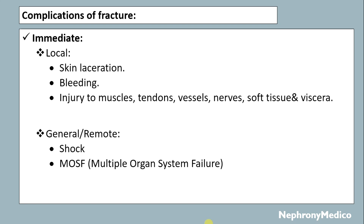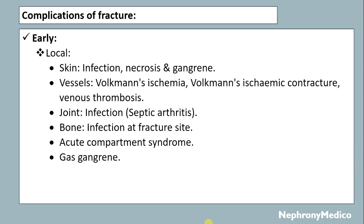Complications of fracture — immediate complications include local complications like skin lacerations, bleeding, and injury to the muscles, tendons, vessels, nerves, soft tissue, and viscera. General complications include shock and multiple organ system failure.